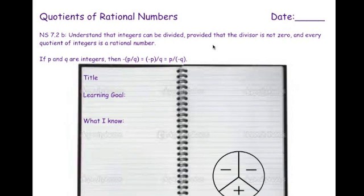Quotients of rational numbers: understand that integers can be divided, provided that the divisor is not zero, and every quotient of integers is a rational number.